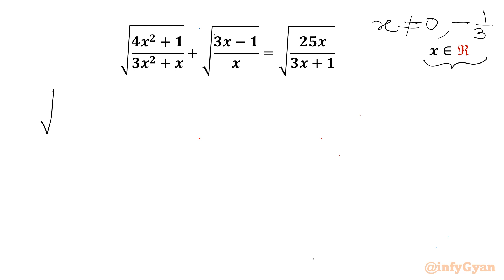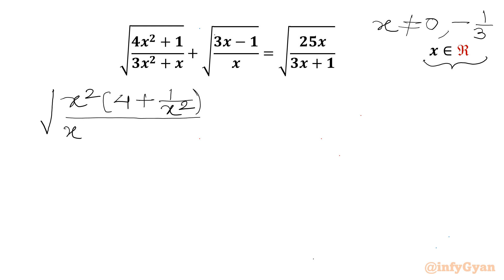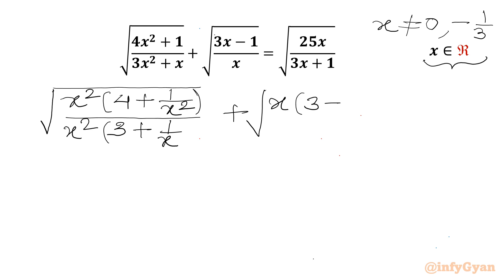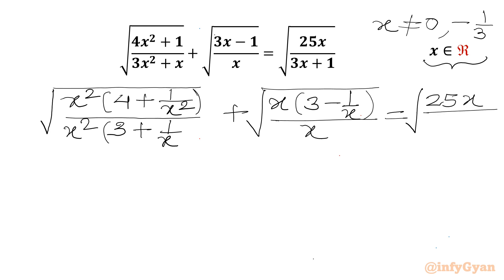Now I will rewrite our equation with x² common from the numerator, giving 4 plus 1 over x² over x² common from the denominator. So 3 plus 1 over x in the bracket, plus the square root of x is common, then 3 minus 1 over x over x, equal to square root of 25x over, if x is common then 3 plus 1 over x will be in the bracket.